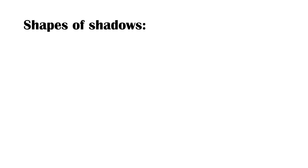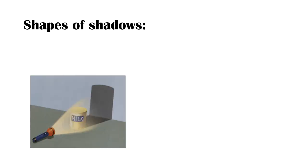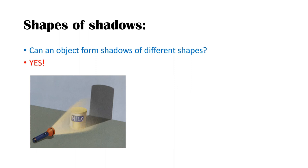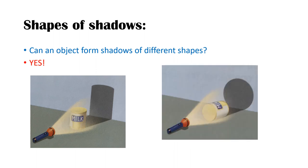Now, shapes of shadows — this is additional information. Can one object form shadows of different shapes? Yes — satu objek boleh menghasilkan pelbagai bentuk bayang-bayang. For example, if you shine light on a cylinder from the side, you get a rectangular shadow, but if you shine from the top, you get a circle. So an object can form shadows of different shapes.